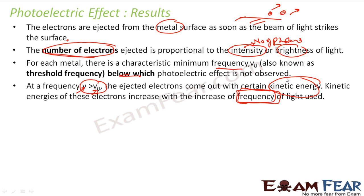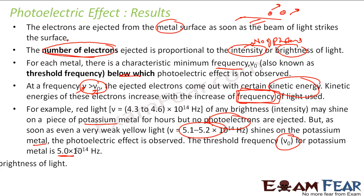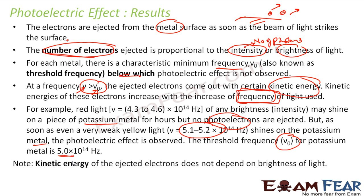The frequency of the light determines the kinetic energy of the electron — it is not the brightness. For example, red light has a certain frequency. Of any brightness, you can put any number of photons on potassium metal for hours, but there will be no photoelectric effect. But as soon as even a very weak light — only two or three photons — with a high enough frequency shines on the same potassium metal, the photoelectric effect is observed. Because the threshold of potassium requires the light frequency to be more than a certain value. The kinetic energy depends only on the frequency of the light, not the brightness.